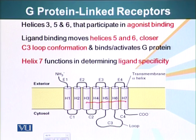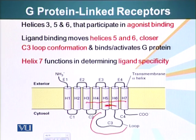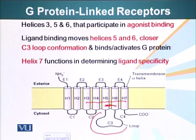Ligand binding moves helices 5 and 6 closer. When the ligand binds, these two helices come closer, and it squeezes this loop which is called the C3 loop. When this loop is squeezed, it changes shape, and the proteins inside the cell can recognize this change in receptor structure and convey this message to other parts of the cellular machinery.